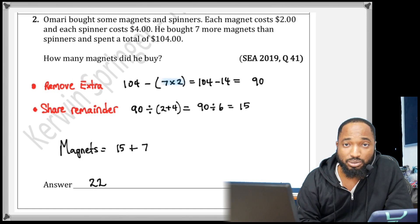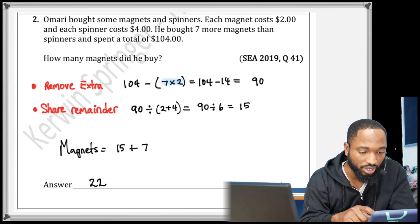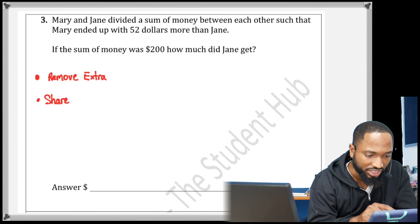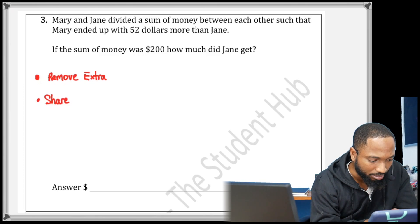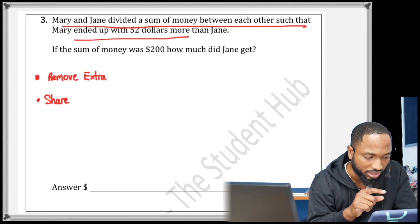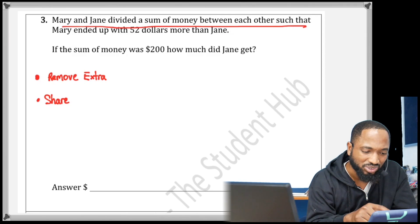Here's the next question. Mary and Jane divided a sum of money between each other such that Mary ended up with $52 more than Jane. All right, so this is just like the first one.